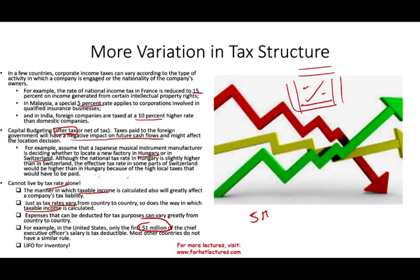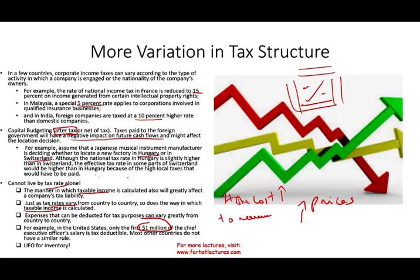In the US, we have LIFO — Last In, First Out — for inventory. Generally, as prices rise, your cost of goods sold rises. Under LIFO, you match the higher, most recent costs to revenue, which reduces profit and therefore reduces taxable income. LIFO is available in the US but not available anywhere else. So although the US rate might be higher, if you employ LIFO, you might pay a lower effective tax rate.